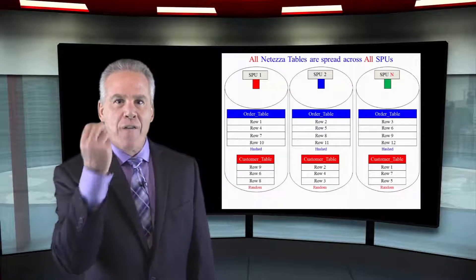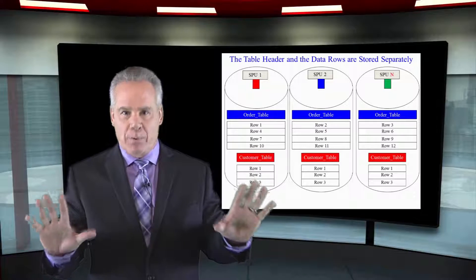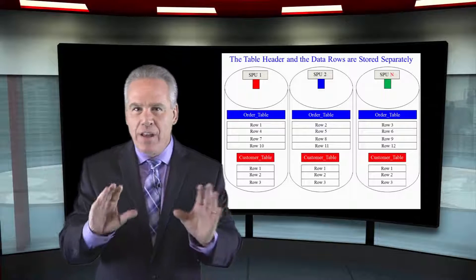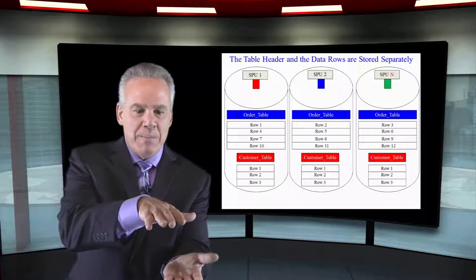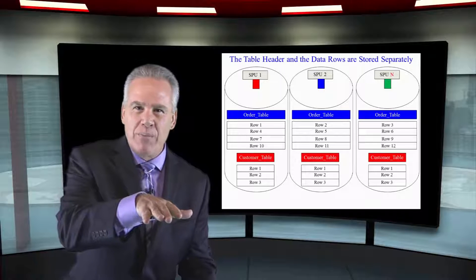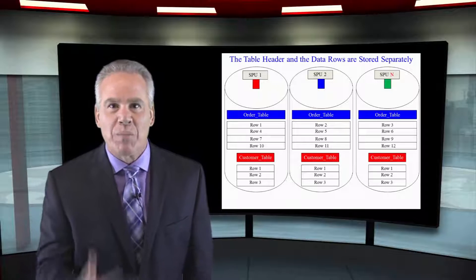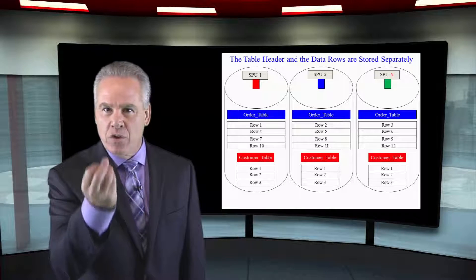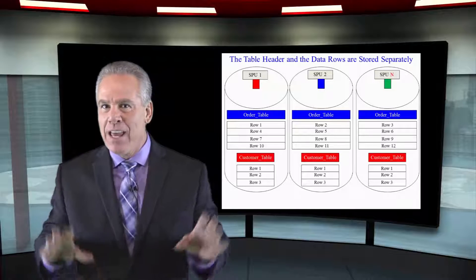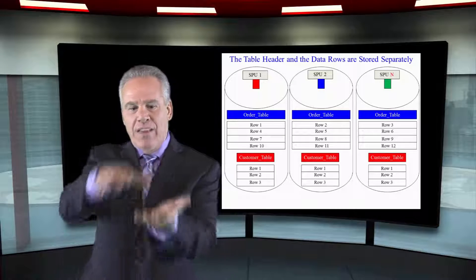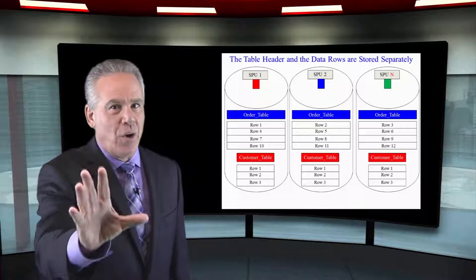Each SPU holds a portion of every table. The table header and the data blocks are separated — they're not stored together. Think about it: you've got one table header for each SPU for a particular table, and then there could be many extents. Netezza holds tables that have a billion rows in them; sometimes a SPU goes 'I've got 25 million rows myself.' So there's an enormous amount of storage in separate extents. But Netezza knows what it's got, how to gather it up, and how to process it fast. The actual table definition and the data blocks are stored on their SPUs, but totally separated.